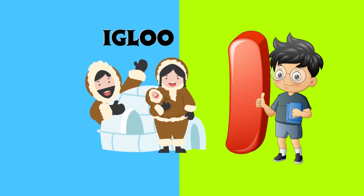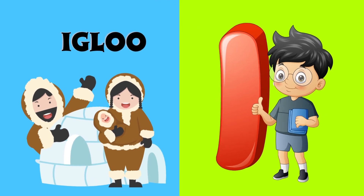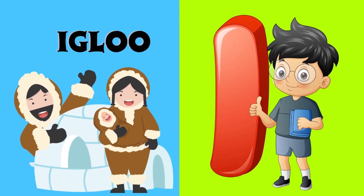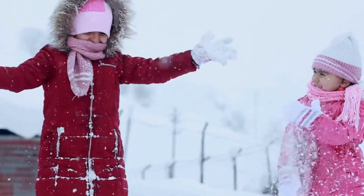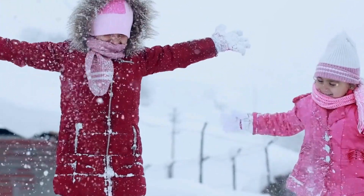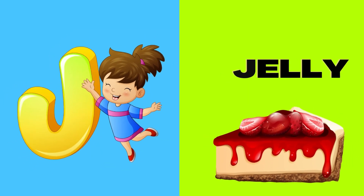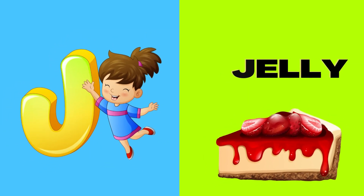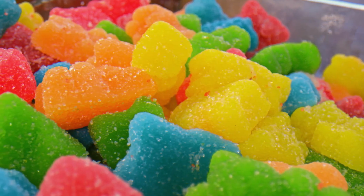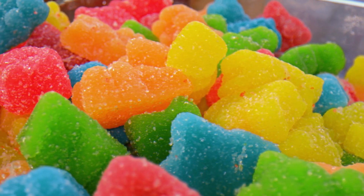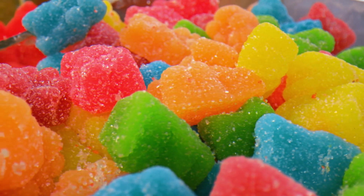I is for Igloo. I-I-Igloo, I-I-Igloo. I, Igloo. J is for Jelly. J-J-Jelly, J-J-Jelly. J-Jelly, J. Jelly.